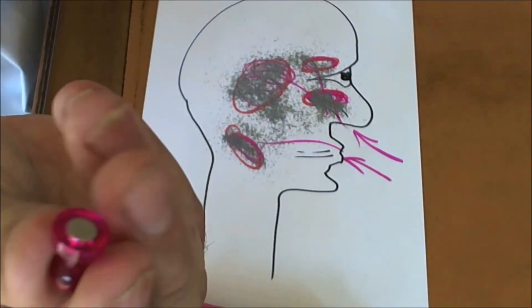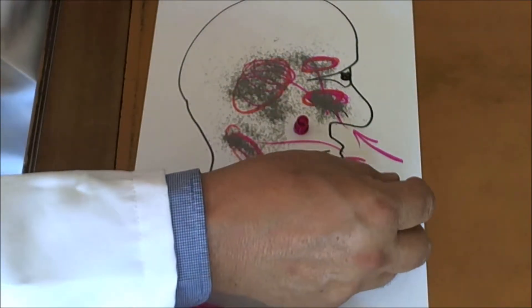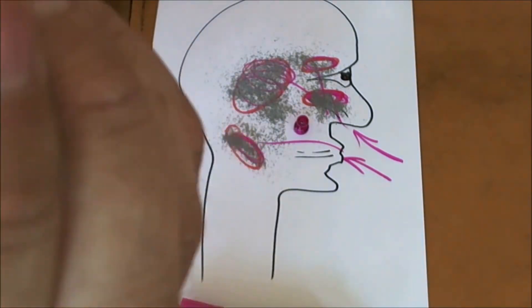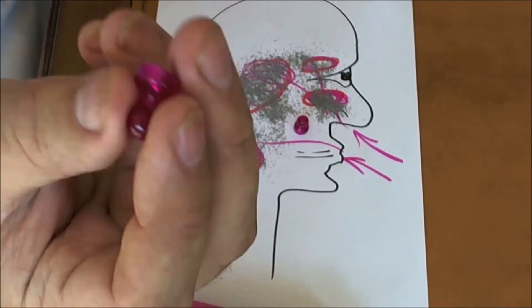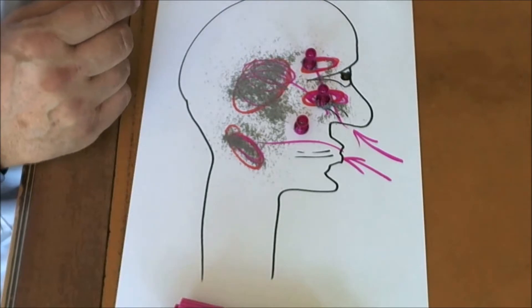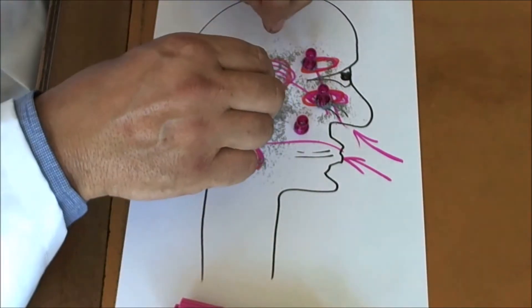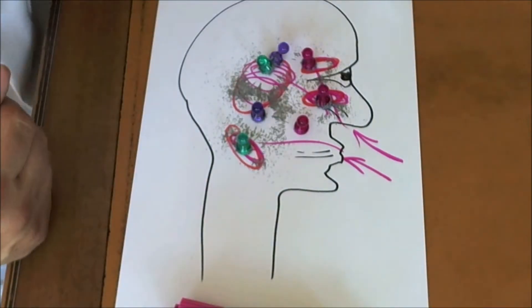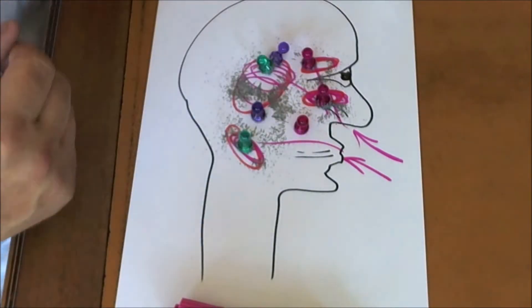As you breathe them in, you're going to breathe tiny particles, tiny droplets of these plant extracts and homeopathic remedies into your sinuses. There's three different sorts of antibacterials: cinnamon, thyme, and clove. You're going to breathe them in and it's going to kill off these parasites on contact.